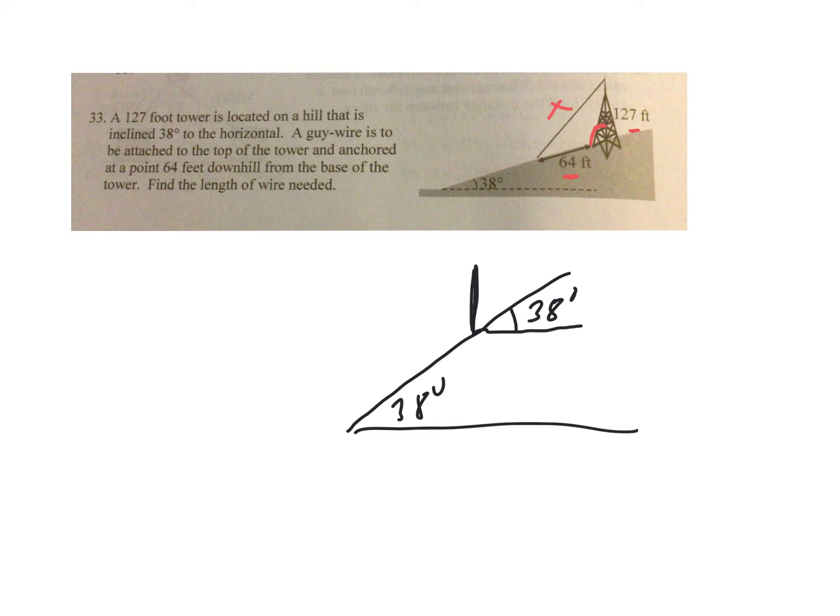If you think of vertical angles, that's also a 38 degree angle. And if you add in that right angle, assuming that the tower makes a right angle to the horizontal, that's 90 plus 38. So that tells me that angle right there is 128 degrees.